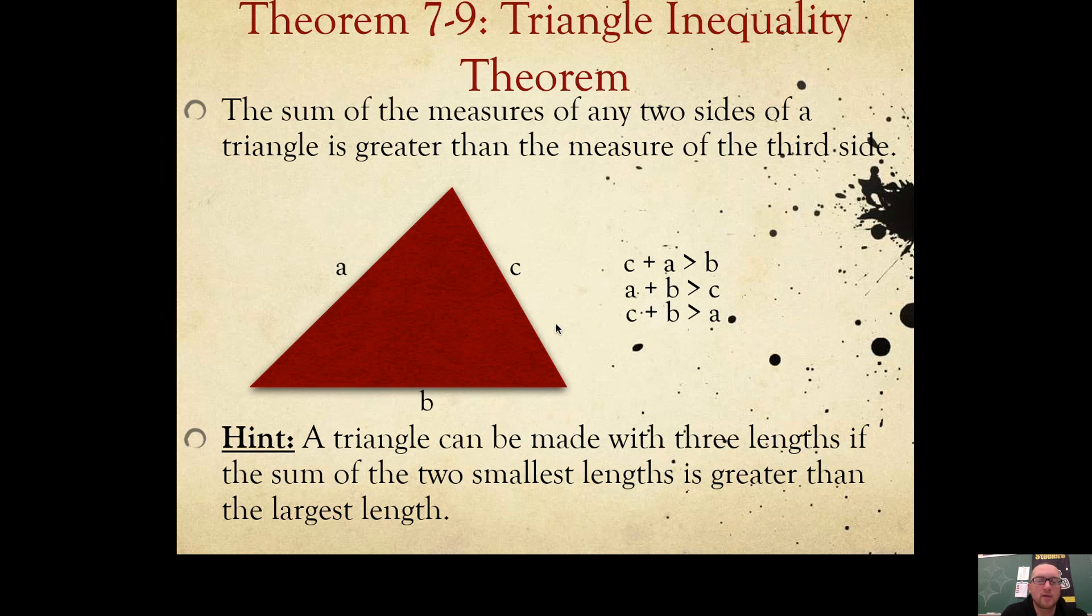If you want to know if three sides can make a triangle, what you do is you find the two smallest sides and you add them together. And if that sum is bigger than the longest length, then it can make a triangle.